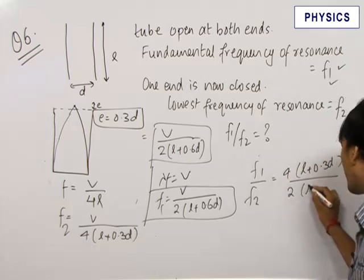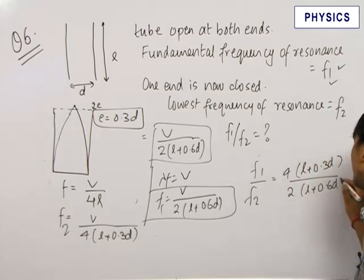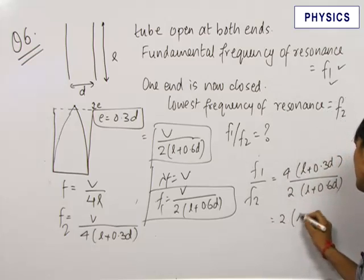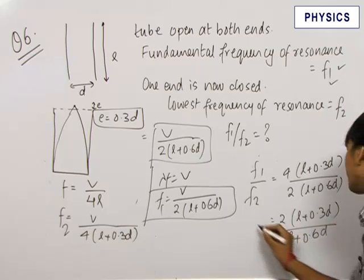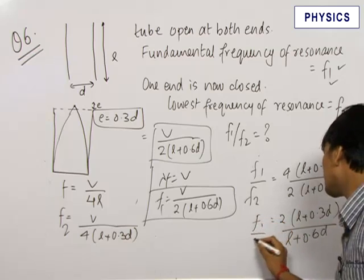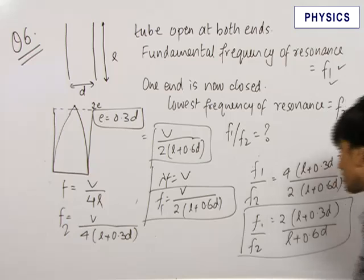upon 2 times L plus 0.6D, that is equal to 2 times L plus 0.3D upon L plus 0.6D. This is our required ratio and our final answer.